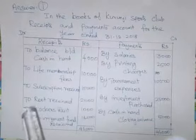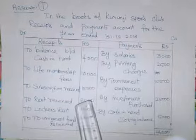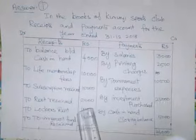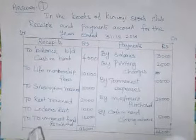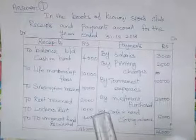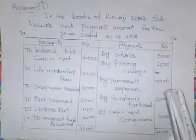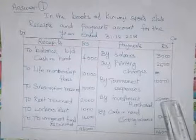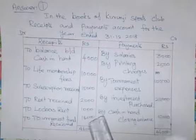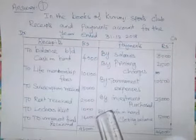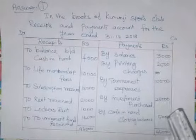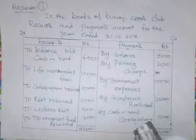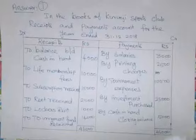That is an income. Rent received Rs. 2,000. Locker rent received Rs. 1,000. Paid for printing charges Rs. 2,500. Tournament received Rs. 14,000. Tournament expenses Rs. 10,500. Investment purchased Rs. 25,000. Debit side total Rs. 46,000. Credit side total Rs. 41,000. Closing cash balance Rs. 5,000. This closing cash balance, when you are preparing the balance sheet, is entered in the balance sheet closing balance sheet on the asset side.